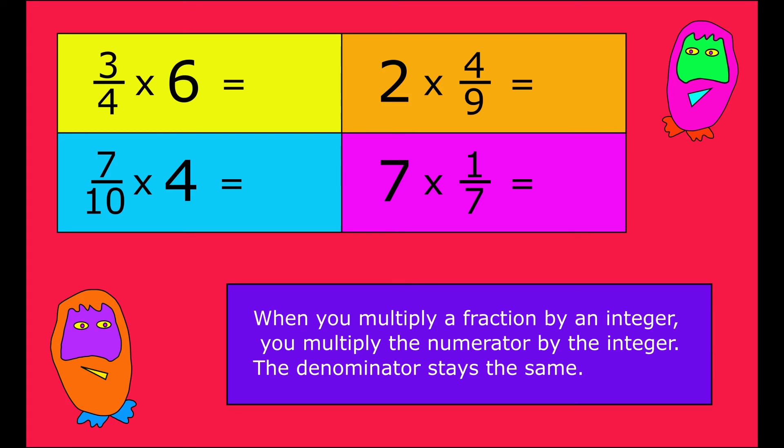Let's take a look at a few more examples. Three-quarters multiplied by six. Well, three multiplied by six is eighteen, so my numerator will be eighteen. And we're working in quarters, so it's eighteen-quarters.